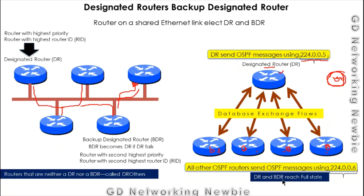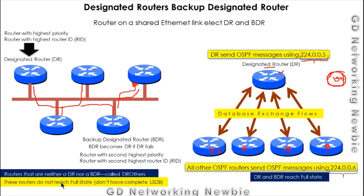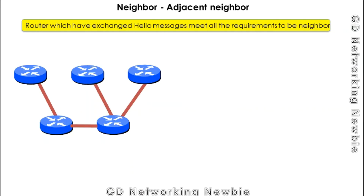The Designated Router and Backup Designated Router actually reach full state. Full state means both routers have the complete Link State Database. Only the DR and BDR have the complete LSDB, while the remaining routers do not — they remain in the two-way state.